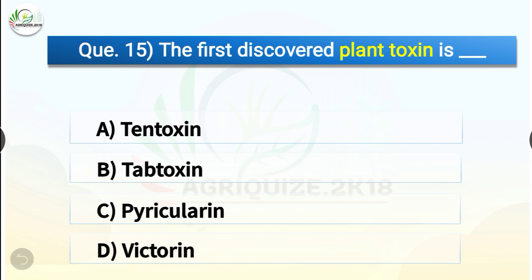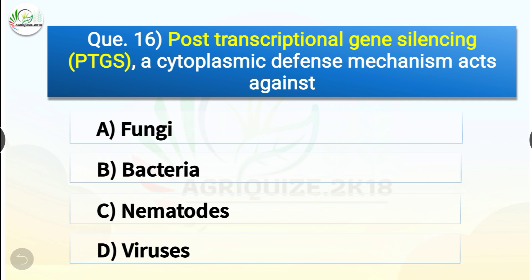Question number fifteen: The first discovered plant toxin is dash. The options are TEN toxin, TAP toxin, pyriculorin, or victorin. The correct answer is option B, TAP toxin. The first discovered plant toxin is TAP toxin. Question number sixteen: Post-transcriptional gene silencing (PTGS), a cytoplasmic defense mechanism, acts against the options are fungi, bacteria, nematodes, or viruses. The correct answer is option D, viruses.